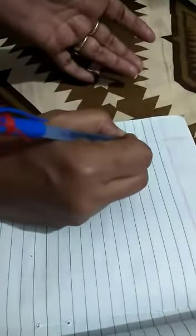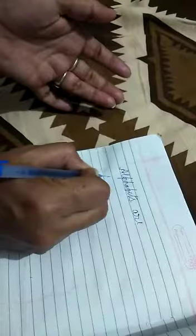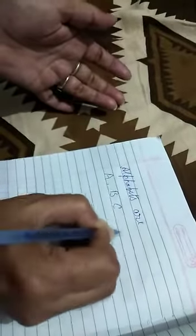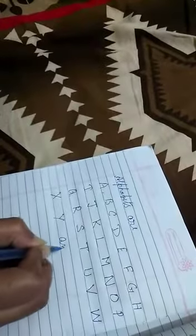Do you know alphabets? You have studied it in your previous classes, alphabets. Alphabets are A, B, C, D, E, F, G, H, I, J, K, L, M, N, O, P, Q, R, S, T, U, V, W, X, Y, and Z.